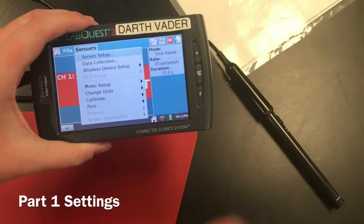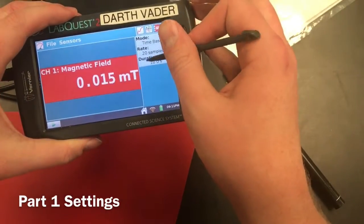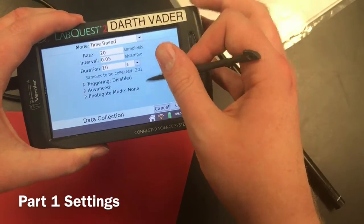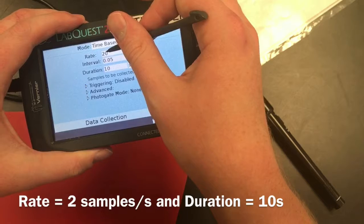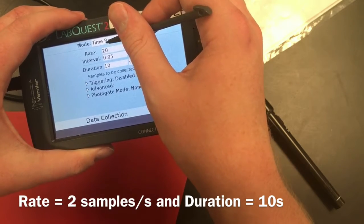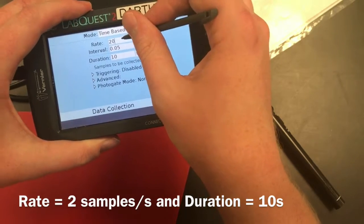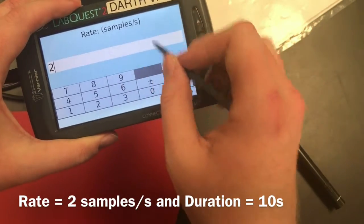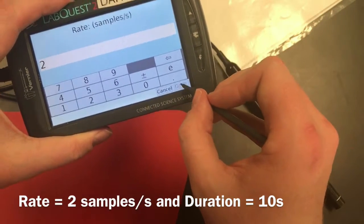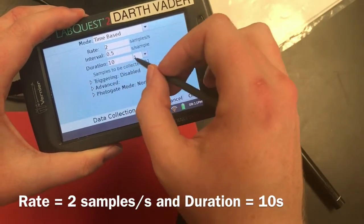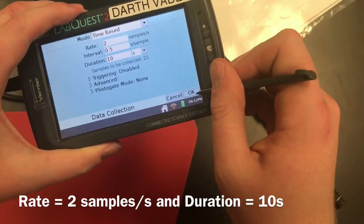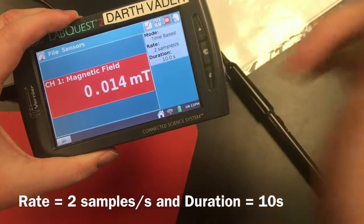Once you've connected the probe, I'm going to set up our settings here. Click in our settings. Our rate is going to be two samples per second, and our duration we're actually going to leave the same, so our duration for this is going to be 10 seconds. Hit okay.